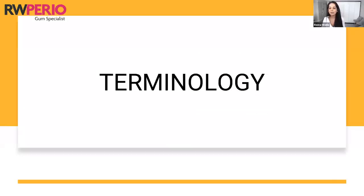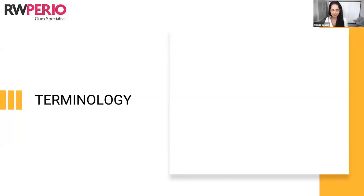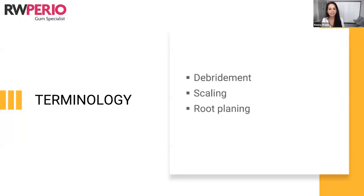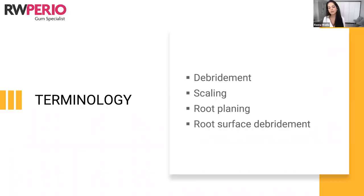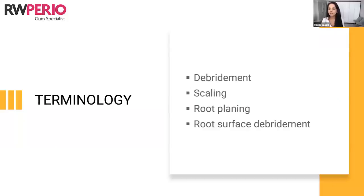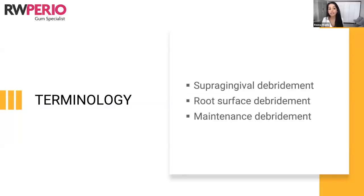Let's start with terminology. I'm a little picky about this but I think it's the right way to be. We often hear terms like debridement, scaling, root planing, and root surface debridement. It's really important both in our notes and when we communicate with colleagues that we use the right terminology. Root planing is definitely old school now — it implies an aggressive approach of removing the cementum, so that one's completely out. The up-to-date terminology is debridement, and ideally root surface debridement. That's the term to use with colleagues and in notes.